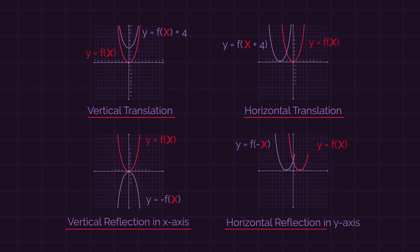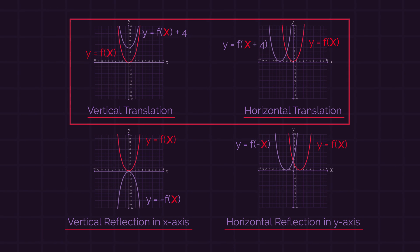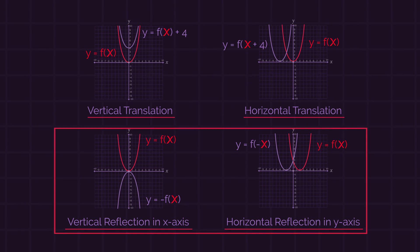In part one, we discovered that functions and graphs can be shifted and reflected. We looked at the translations in more detail, so in this part we're going to look at the reflections.